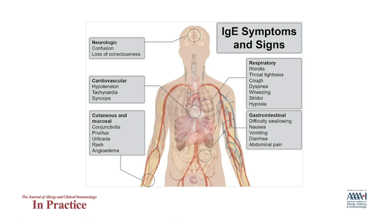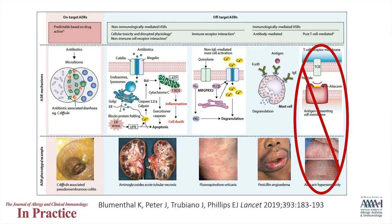Skin testing without a history of a reaction should not be done. Immediate testing such as skin prick and intradermal testing, interpreted at 15 to 20 minutes, is not appropriate for reactions such as drug fever, acute interstitial nephritis, drug-induced liver injury, eosinophilia, and hemolytic anemia. For testing of selective severe cutaneous adverse reactions such as drug reaction with eosinophilia and systemic symptoms (DRESS), please see the accompanying delayed hypersensitivity testing video.